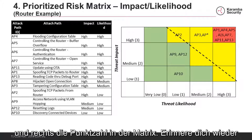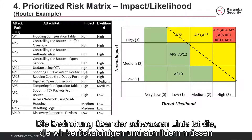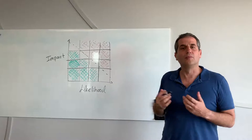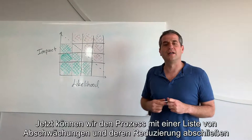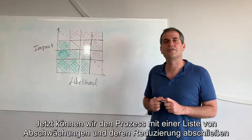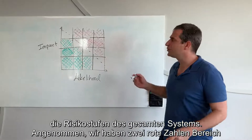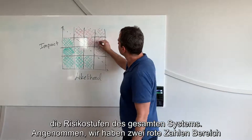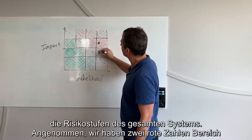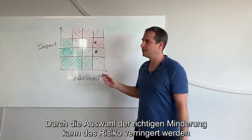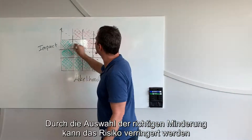Remember, the threats above the black line are the ones we need to consider and mitigate in our design and development process. Now we can complete the process with a list of mitigations and how they reduce the risk levels of the entire system. Assuming we have two threats in the red area, choosing the right mitigations can reduce the risk levels and bring them into the green.